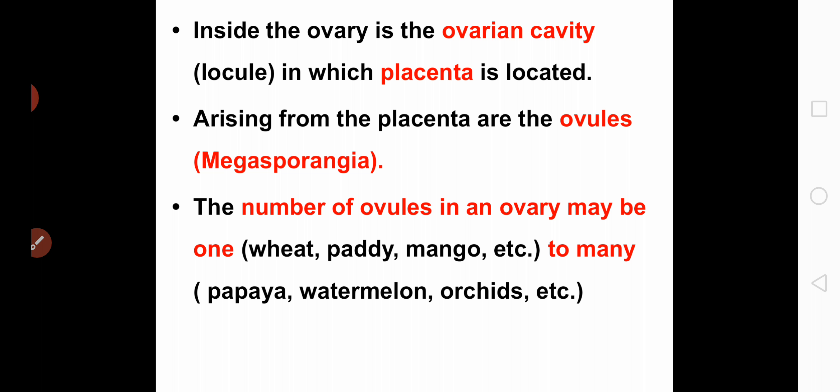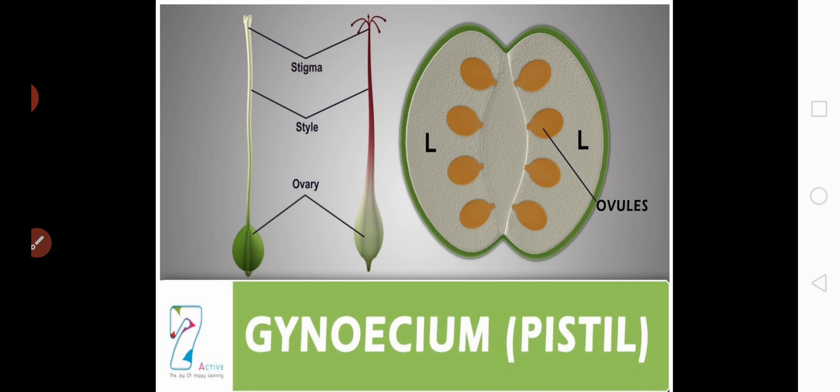Next to the style, a basal swollen region is present and this basal region is called the ovary. Inside the ovary there is an ovarian cavity, and that cavity is called the locule, in which the placenta is located. Arising from the placenta are the ovules, and these ovules are also referred to as megasporangia. The number of ovules in an ovary may be one to many.